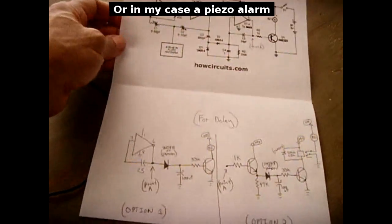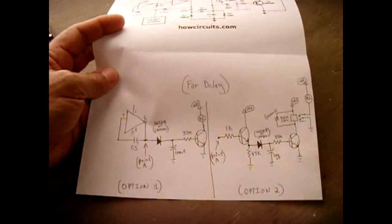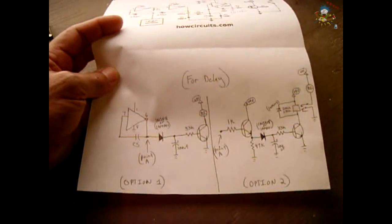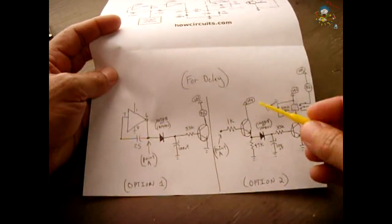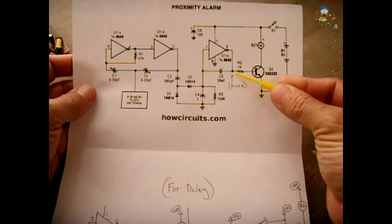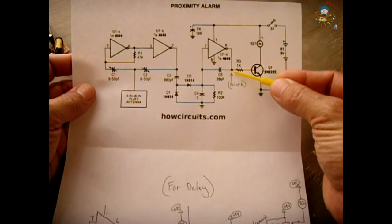Now what I did, I didn't want to just have my hand sweep over it and have a brief beep. I wanted to have a beep that lasted for a few seconds before it went off, so I added a little bit of a delay. So right here, you see point A. That's the output of pin 6. There's a couple of ways you can add the delay.